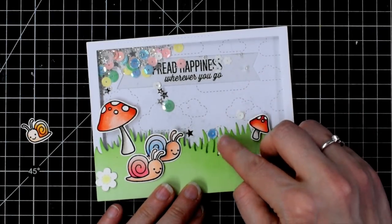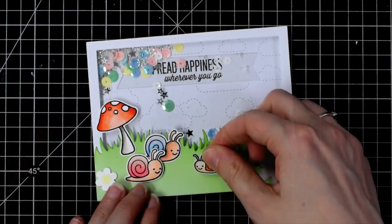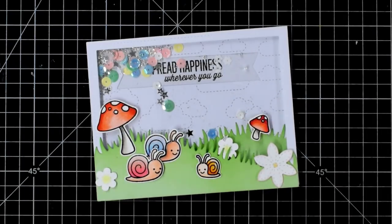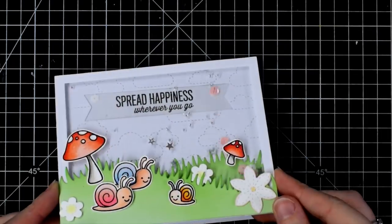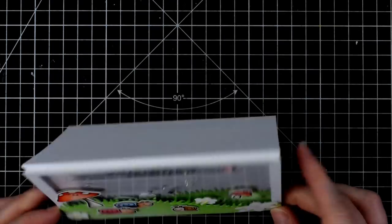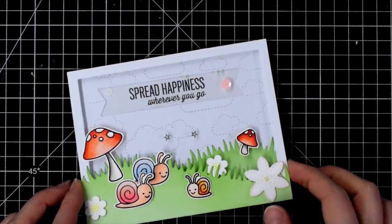So let's adhere this one just behind the grass and then stick my little cute snail on here. And there we go! Shaker is complete! Another one bites the dust!